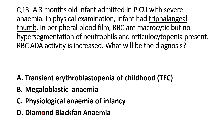The last option is D — Diamond-Blackfan anemia — in which congenital malformation of limbs can be present. It is macrocytic with no hypersegmentation of neutrophils, which is characteristic of Diamond-Blackfan anemia. Reticulocytopenia is present, and RBC-ADA activity is increased in Diamond-Blackfan anemia. So the right answer is D.